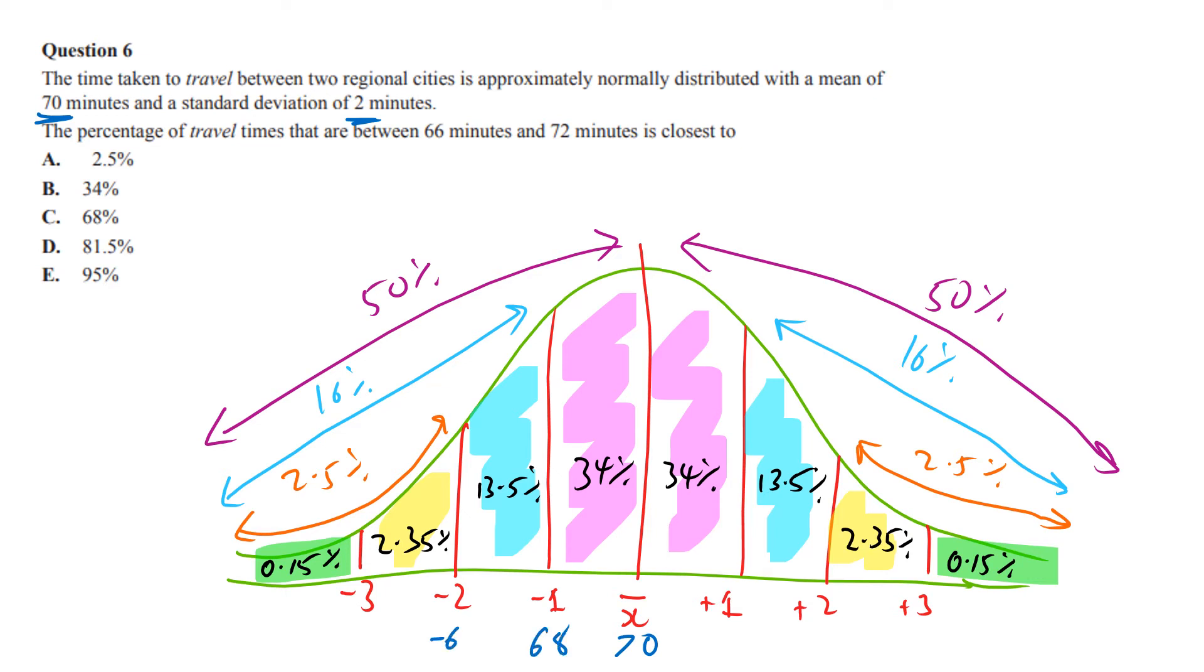And then plus one is 72, 74, 76. Those are your points. We want to know between 66 and 72.